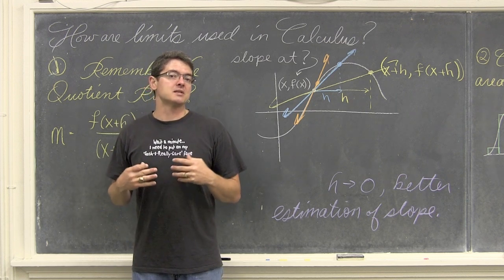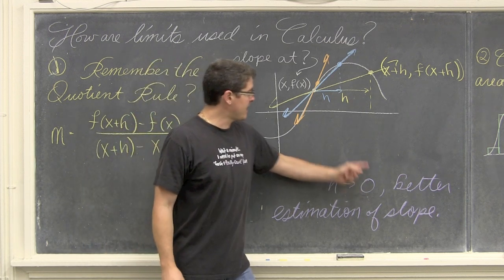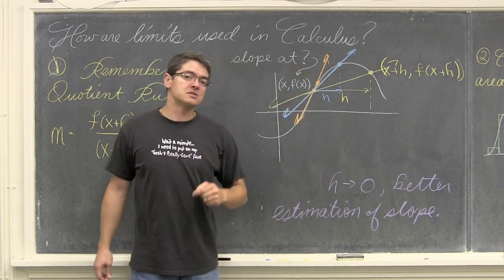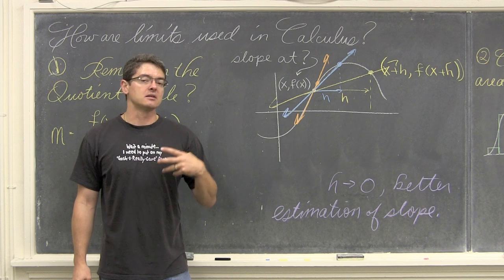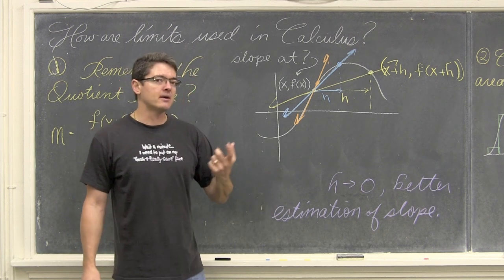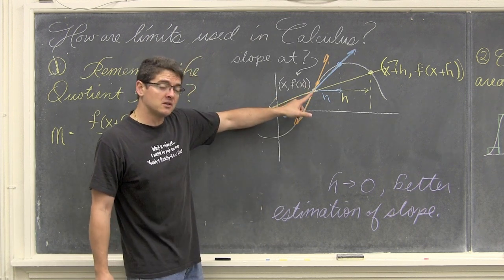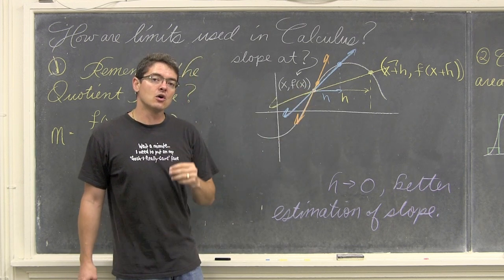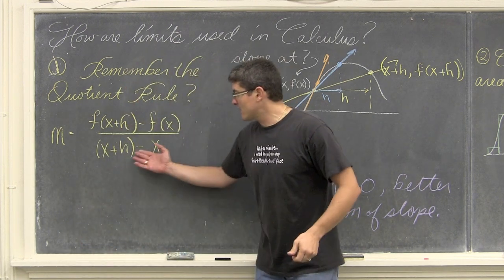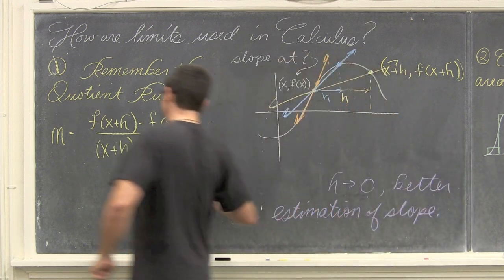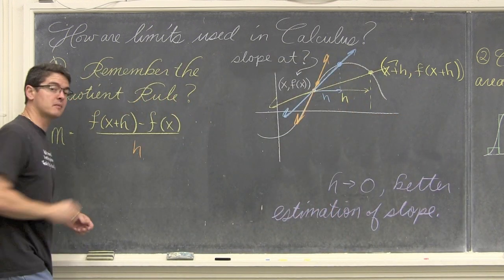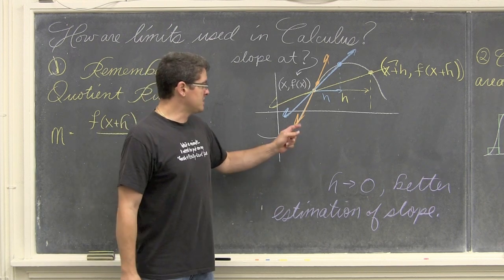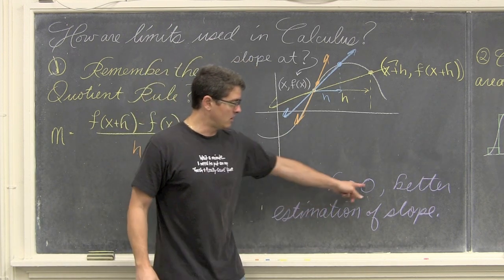So what calculus will do — in this idea of limits that you are going to learn in this section — is if you let h, the horizontal distance between your two points that you are using to find slope, approach zero, then you are going to get a better and better estimation of the slope of this curved line. Calculus will be the first time — and actually we are going to do it in this chapter — that you are going to be allowed to find the slope of a curved line, which is really, really cool. But if we allow h to become zero, because this denominator was originally h and x minus x is zero, we can't actually divide by zero. So with calculus and this idea of limits, we are going to let that denominator approach zero but not actually equal zero.